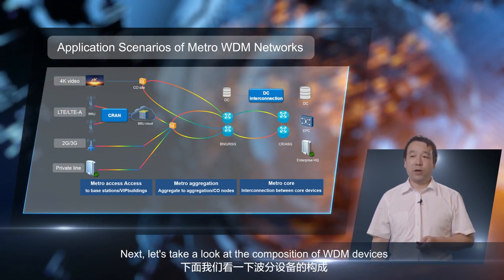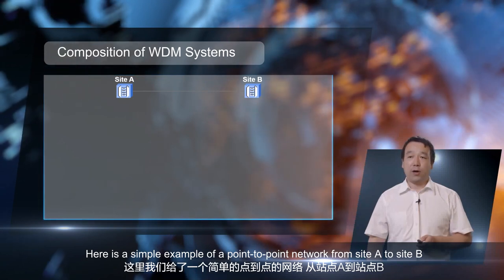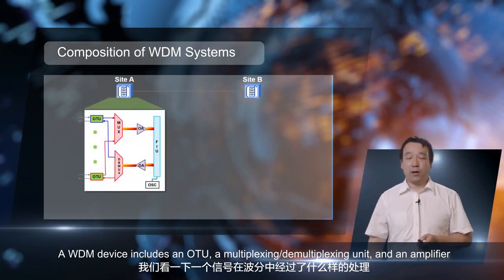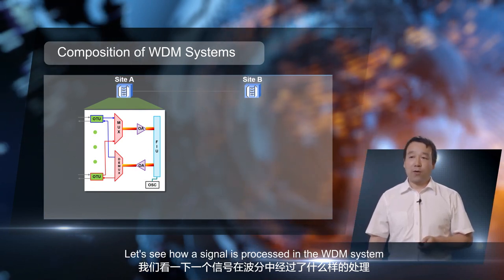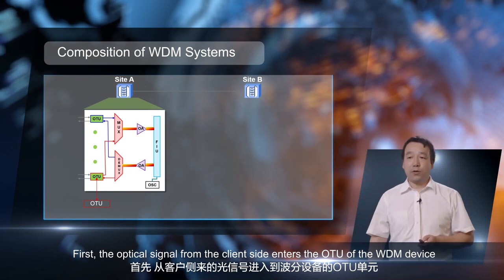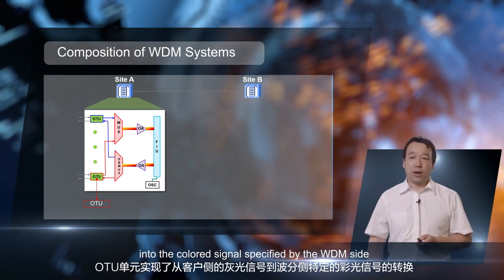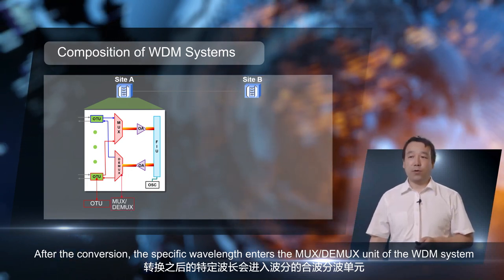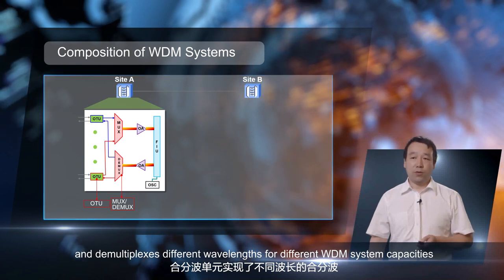Let's take a look at the composition of WDM devices. Here is a simple example of a point-to-point network from site A to site B. A WDM device includes an OTU, a multiplexing-demultiplexing unit, and an amplifier. The optical signal from the client side enters the OTU of the WDM device. The OTU converts the gray signal from the client side into the colored signal specified by the WDM side. After the conversion, the specific wavelength enters the MUX-DEMUX unit, which multiplexes and demultiplexes different wavelengths for different WDM system capacities.